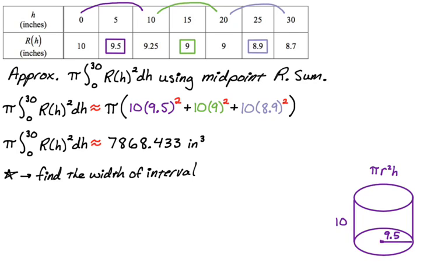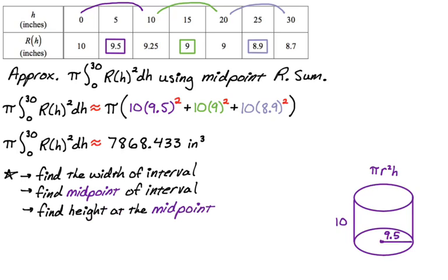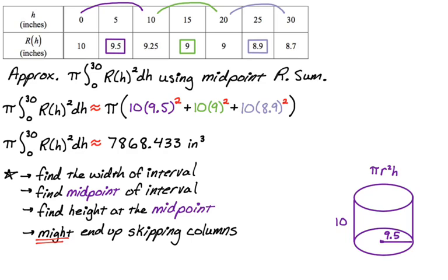For a midpoint sum: find the width of the interval, find the midpoint of the interval — which is still an input in the domain — and find the height at that midpoint. Note that you might end up skipping some columns if a value doesn't fall at a needed midpoint. That covers all four types of sums with tables: left, right, midpoint, and trapezoidal. I hope you found this helpful — good luck.